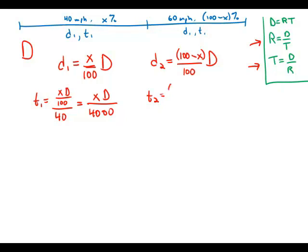Time 2 is this distance divided by the rate in that leg of the trip, which is 60 miles an hour. Again, numerator stays the same, 100 minus X times D. And in the denominator, we multiply. 60 times 100 is 6,000.